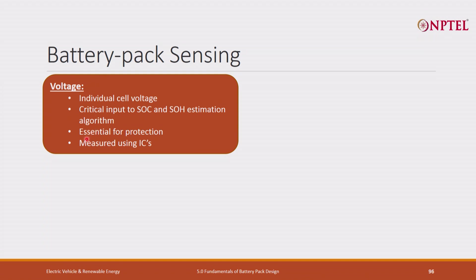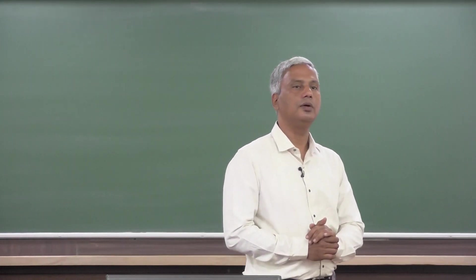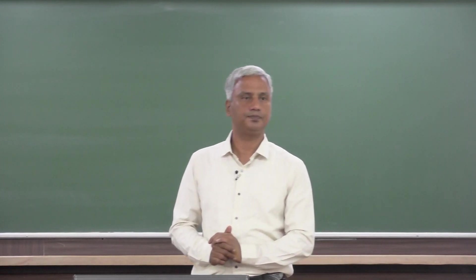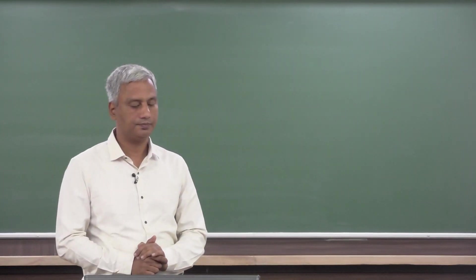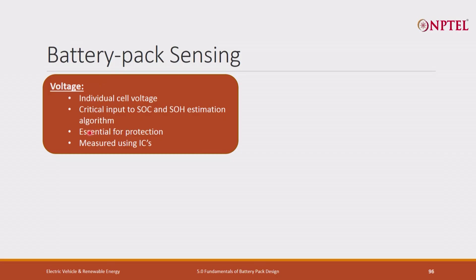Voltage measurement is also essential for protection. If the cell voltage is going beyond the limit, it should be measured and the BMS should take action to shut off the battery pack or reduce the functionality of the battery pack. How is it being done? It is measured using an integrated chip — that is what we call the slave architecture, where in the slave we have only this integrated chip which can measure the voltage.